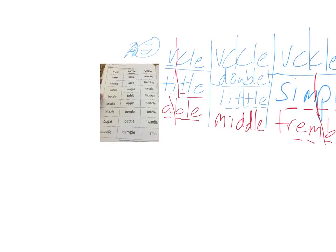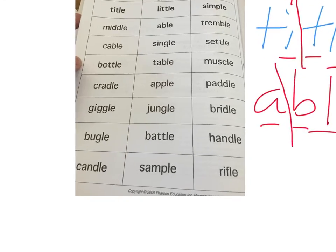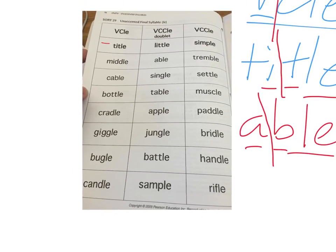Go ahead and look at these words here. You can copy down the ones we've already sorted. We sorted title, little, simple, middle, able, tremble. Sort the rest of them. And then play the video and I will reveal how your sort should look.